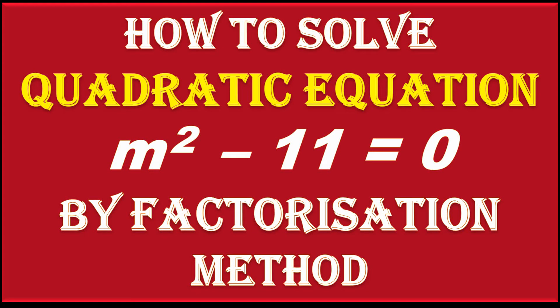Friends, now we have to solve quadratic equation m² - 11 = 0 by factorization method.